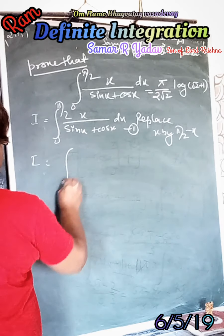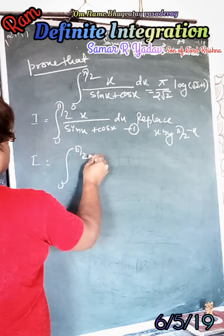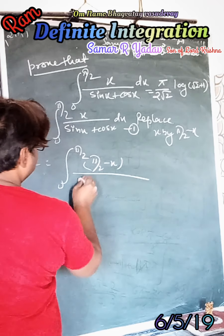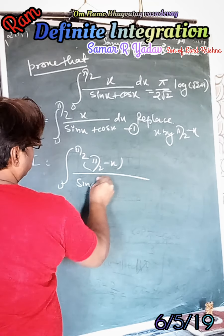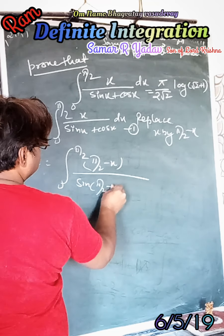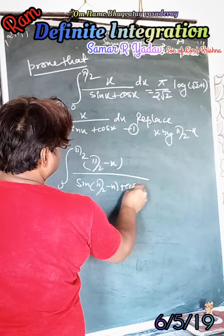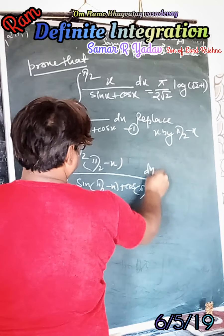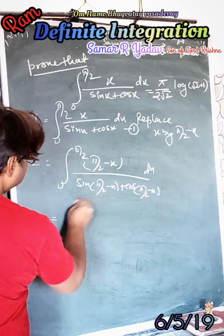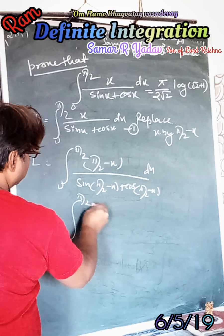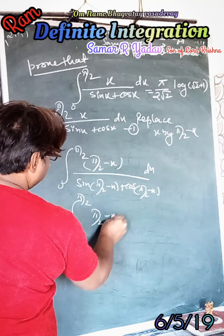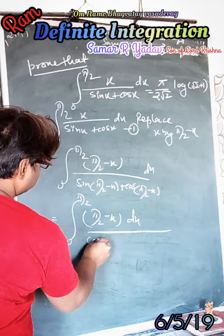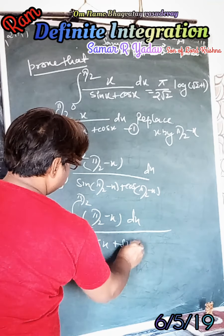Therefore, I is equal to the integral from 0 to π/2 of (π/2 minus x) upon sin(π/2 minus x) plus cos(π/2 minus x) dx. This simplifies to the integral from 0 to π/2 of (π/2 minus x) dx upon (cosx + sinx).